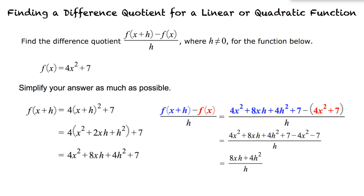Is this our final answer? Not yet — we still have two more steps to simplify the equation. We need to factor out the h in the numerator first, which gives us h times 8x plus 4h over h. Finally, we can cancel out our h variable on the numerator and denominator, leaving us with 8x plus 4h as our final result for the difference quotient.